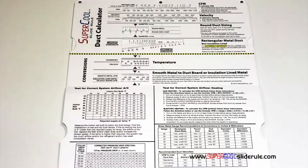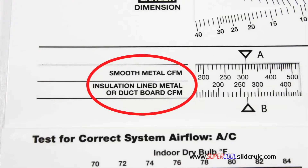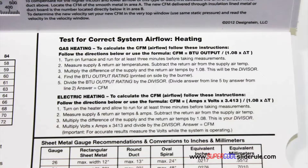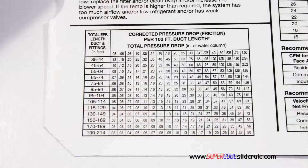Inside is packed with even more information. It performs sizing of both metal and flexible duct. It has the only direct reading conversion from smooth metal to insulation lined metal we've ever seen. The majority of technicians have never been taught that if the insulation is on the inside of the ductwork, you cannot size it with a regular duct calculator. It has step-by-step directions for determining airflow through a gas furnace, electric furnace, or an air conditioning unit. It has pressure drop multipliers for ductwork, as well as recommended velocities.